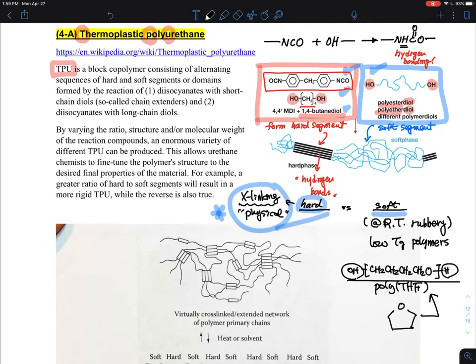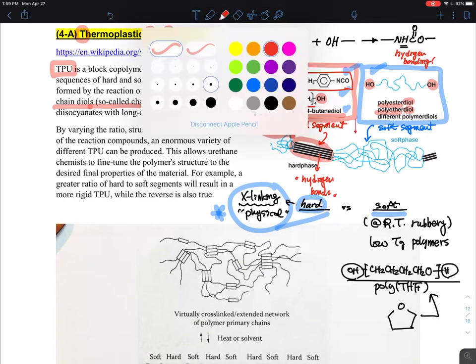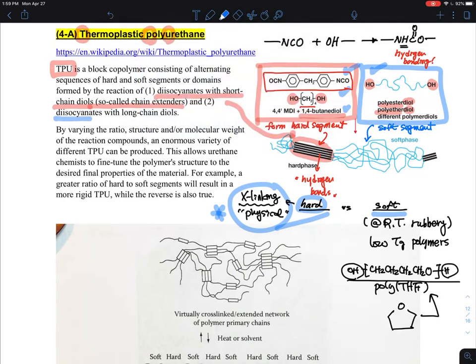Let me recap. Thermoplastic polyurethane is used quite diversely in a lot of applications. The whole idea is you want to make diisocyanate with short chain diol—they sometimes call it the chain extender—and that forms this domain, the hard domain. Then there is the diisocyanate with long chain diol, which forms the flexible domain or soft phase shown here.